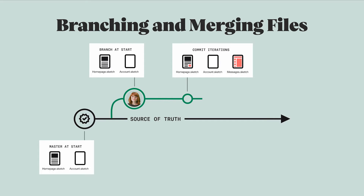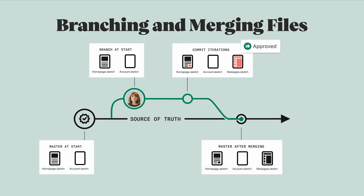But after you've committed changes to the files on your branch and have had them reviewed or approved, you want to update master so that it looks like the new approved designs. When you click the merge branch button, Abstract compares the files. It ignores any files that you did not change, looks at the files and artboards you did change, and updates the files in master to make them match what was in your branch.